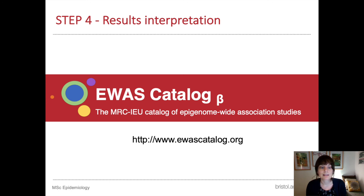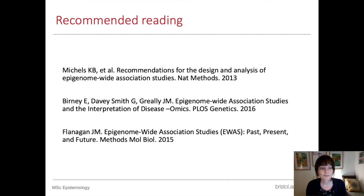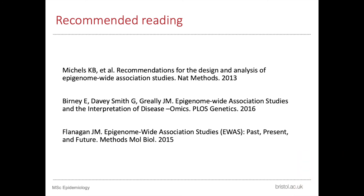One way to do that is to look up identified CPGs from your EWAS in a repository of previous EWAS findings, such as the EWAS catalogue, which was developed at the MRC Integrative Epidemiology Unit in Bristol. If you're interested in finding out more about EWAS and learning about some of the methods and their many limitations, the referenced papers are a really good place to start. Thank you.